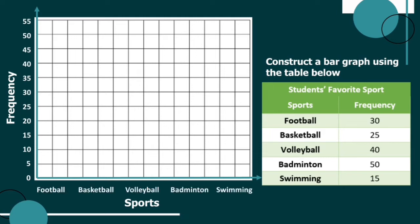For the frequency, we have the number of students. For the categories, we have football, basketball, volleyball, badminton, and swimming. Then it's time to draw the bars.